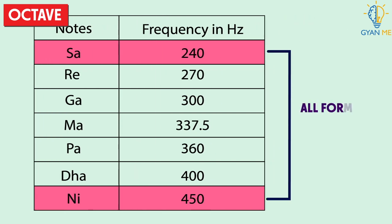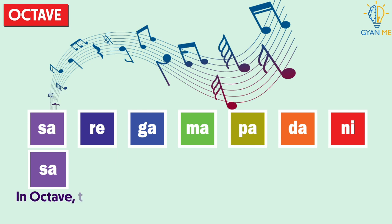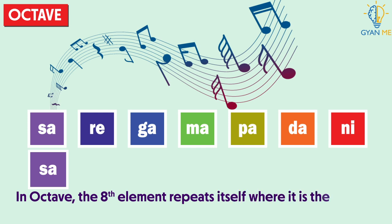Thus, they all form seven melodies in the music and the eighth note will be Sa again — that is, it will be repeated. Hence we can say that it forms an octave where the eighth note is the same as the first note. In simple words, in an octave, the eighth element repeats itself, being the same as the first.